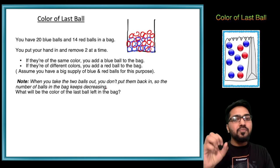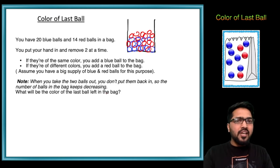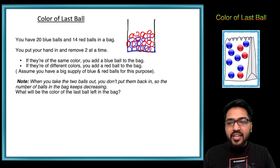So basically what's happening is we keep removing two balls at a time. If both balls are the same color, let's say both are blue or both are red, then we remove both of them but additionally we add one blue ball inside. So effectively we're removing one ball.